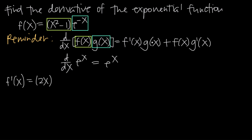Then we have to multiply that by g of x, and we don't do anything to g of x — we just keep it exactly as is. We said g of x is e to the negative x, so we multiply by e to the negative x. Then according to product rule, we add to that f of x, unchanged. So f of x in its original form is x squared minus 1. But we have to multiply that by g prime of x. Since g of x is e to the negative x, we need to find the derivative of e to the negative x.